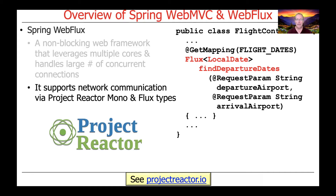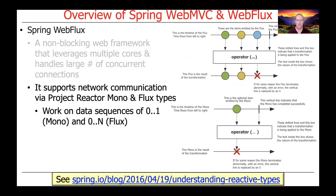Unlike before where we were using lists or maps, which are inherently synchronous data structures — when you make a call and get a list back, you get back all of those things at once — in this case we get a Flux or a Mono back, which is inherently asynchronous.